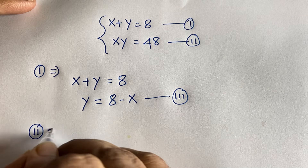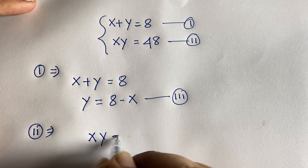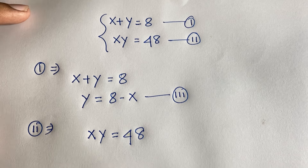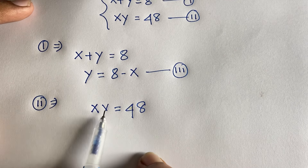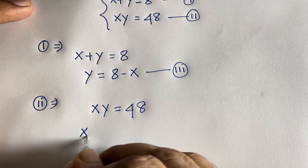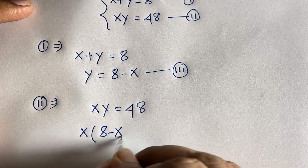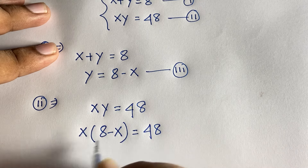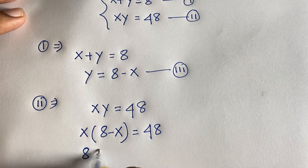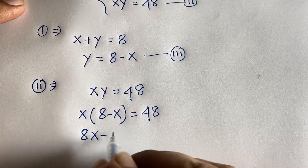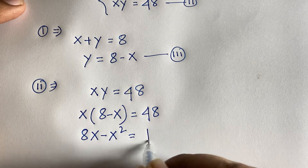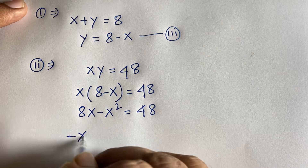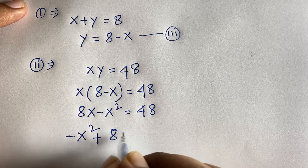Our second equation is x times y equals 48. Now if I substitute y with 8 minus x, we get x times (8 minus x) equals 48. Expanding this: 8x minus x squared equals 48.